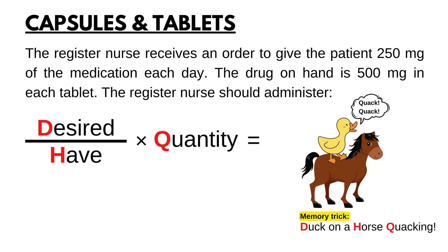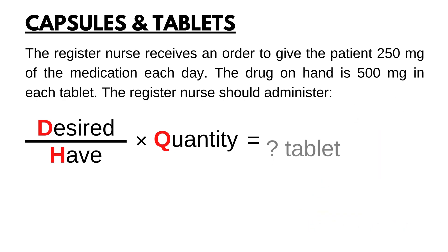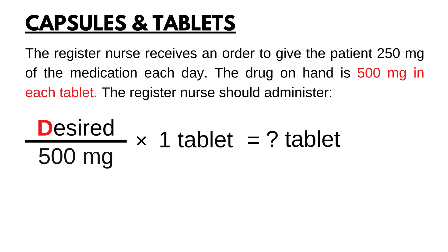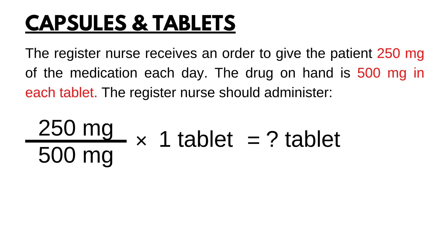First, let's set up our formula with the unit answer. For this problem, it's tablet. Now that everything is organized, we're going to start plugging things in. I like to start plugging in the have and the quantity, because they are usually given to you and they come together. For this problem, it would be 500 mg in each tablet. For desired, you need to plug in the doctor's order: 250 mg. Make sure that both units on top and bottom are the same, because they need to cancel out — in this case, mg. Otherwise, you need to do some conversions. Now that everything is organized, we calculate: 250 mg divided by 500 mg times one tablet. Mg will cancel out, and the answer will be 0.5 or half of a tablet.